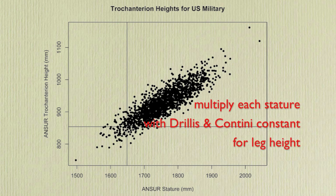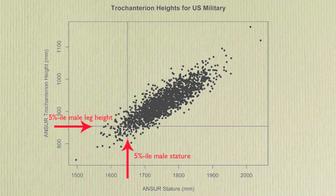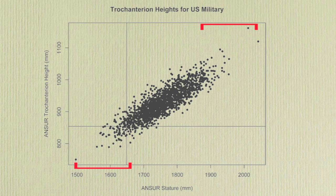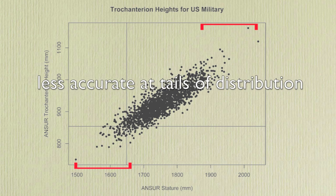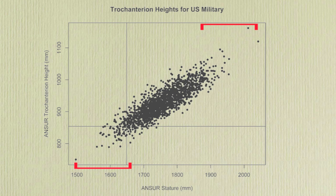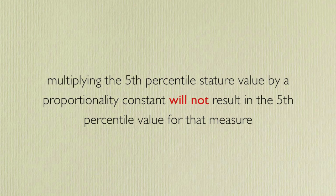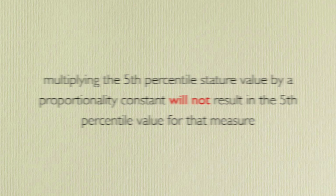Unfortunately, people do not fit proportionality constants exactly — there is some variability. Two people with the same stature may not have the same exact anthropometry. Proportionality constants are also less accurate at the tails of a distribution. Multiplying the 5th percentile stature value by a proportionality constant will not result in the 5th percentile value for that measure.